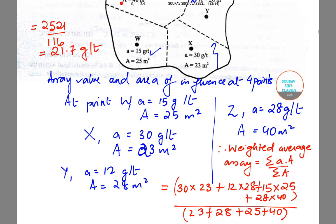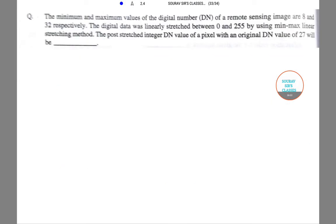Moving on to the next question. The minimum and maximum values of digital number of a remote sensing image are 8 and 32 respectively. The digital data was linearly stretched between 0 and 255 using min-max linear stretching method. We need to calculate the post-stretch integer DN value of a pixel with original DN value 27.